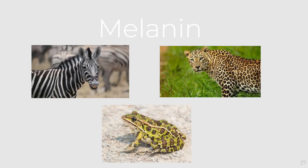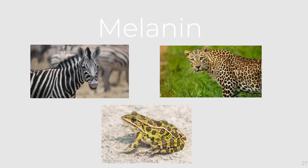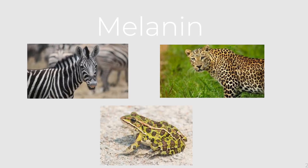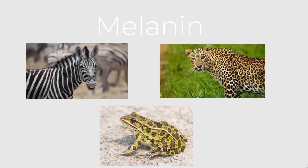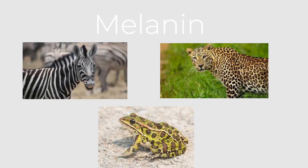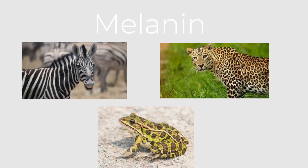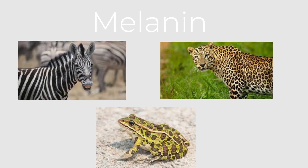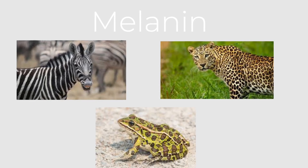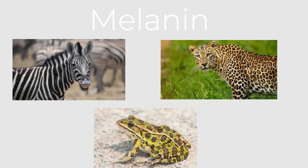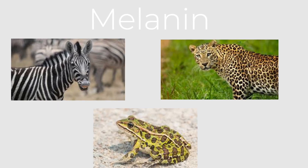Want to learn some more cool facts about melanin? Well, all living things have pigment and pigment makes color. Melanin is a pigment that forms the shades of brown. Melanin also causes a zebra's stripes, a leopard's spots, and a frog's speckles. In addition to their skin, people have melanin pigment in their eyes and hair too. Pretty cool, huh?